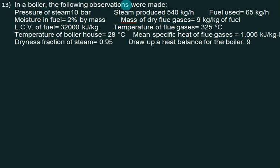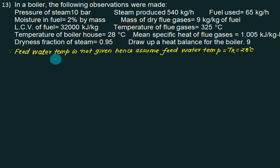This time we have given a boiler sheet, problem 13. Data is given: pressure is 10 bar, steam produced is 540 kg/h, fuel used is 65 kg/h, moisture is 2% by mass, mass of dry flue gas is 9 kg/kg of fuel, lower calorific value is 32,000 kJ/kg, flue gas temperature is 325°C, boiler house is at 28°C, mean specific heat of flue gases is 1.005 kJ/kg K, dryness fraction of steam is 0.95. This problem carries 9 marks. Feed water temperature is not given, hence assume feed water temperature is equal to TR equal to 28°C.